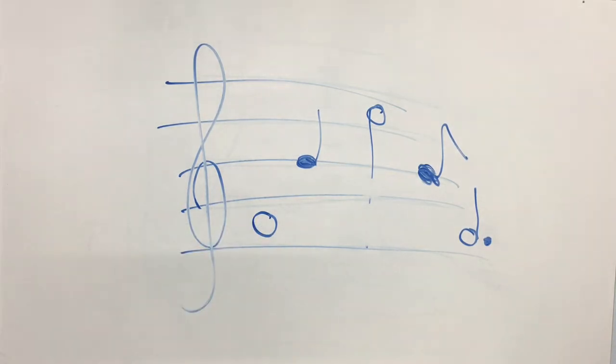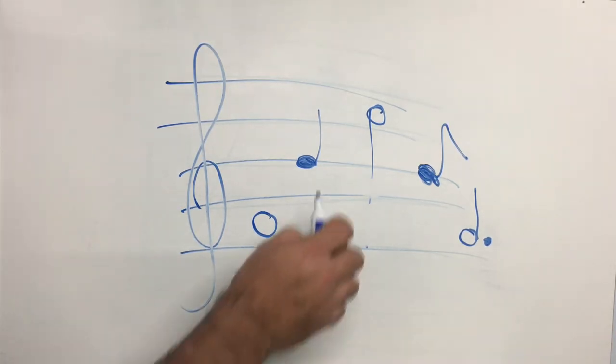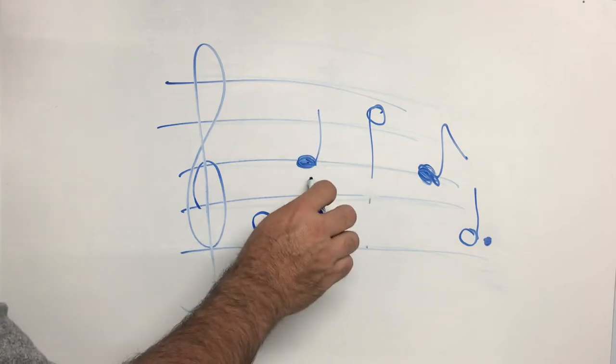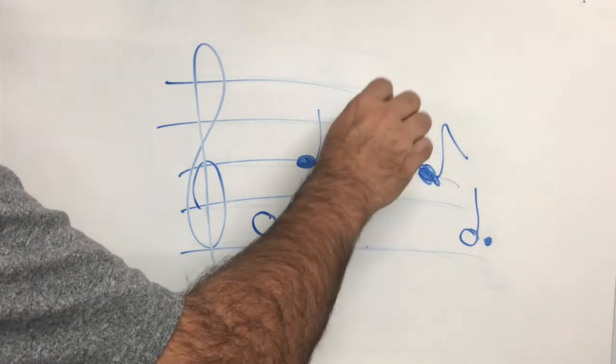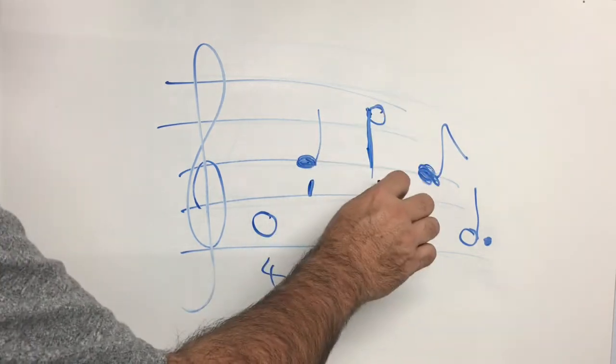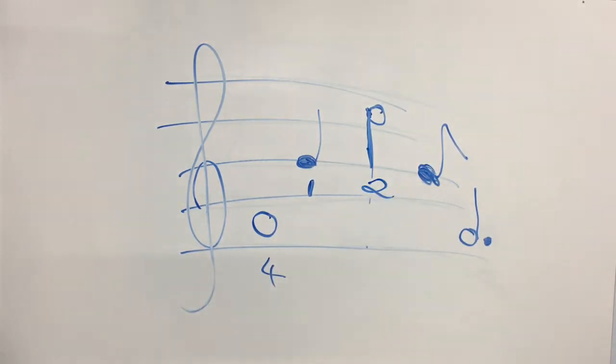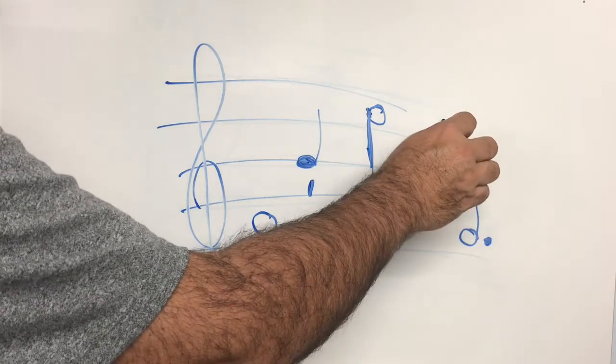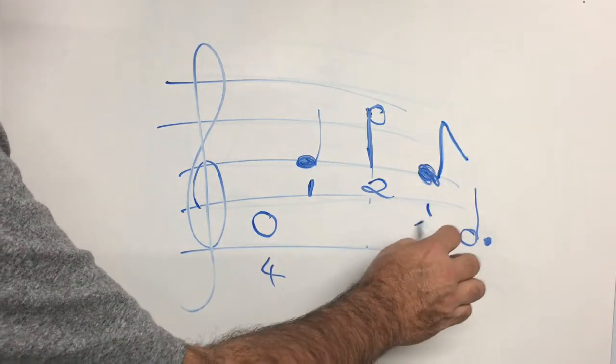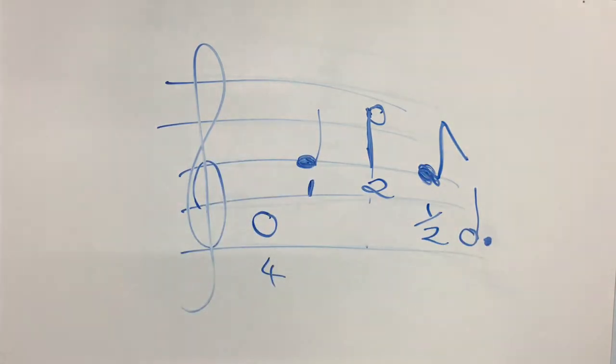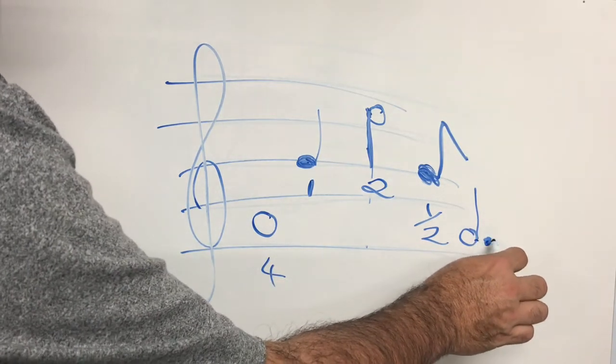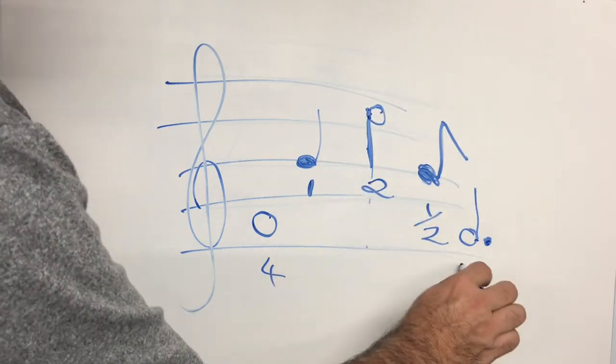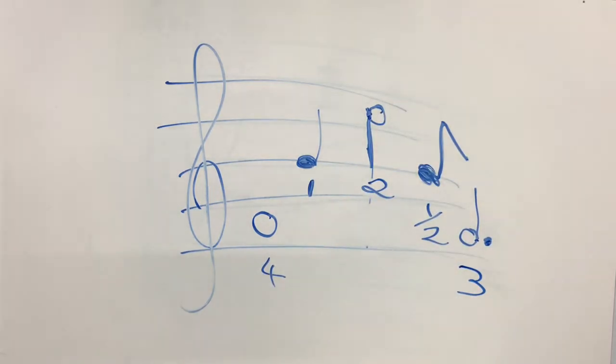Here we go. First one. Just a circle is worth four counts. It's called a semi-breve. Colored in with a stem is worth one. Called a crotchet. Not colored in, but has a stem of course. Minim worth two. Colored in, stem and tail is half. It's called a quaver. And a dotted minim. So it's one of these guys with a dot worth three.